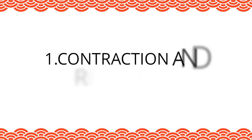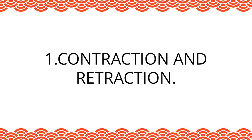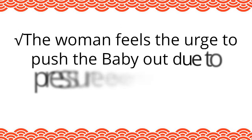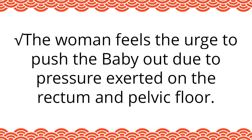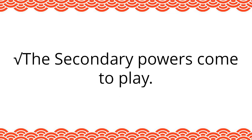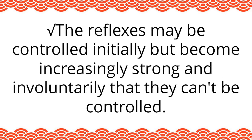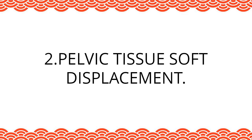Physiology of the second stage of labor. One: contraction and retraction. The contractions become more expulsive and strong. The woman feels the urge to push the baby out due to pressure exerted on the rectum and pelvic floor. The secondary powers come to play. The reflexes may be controlled initially but become increasingly strong and involuntary so that they can't be controlled.